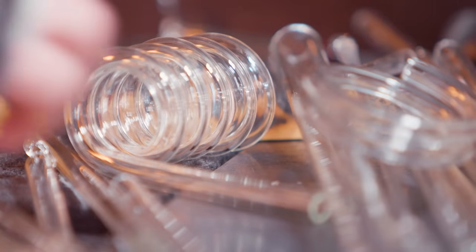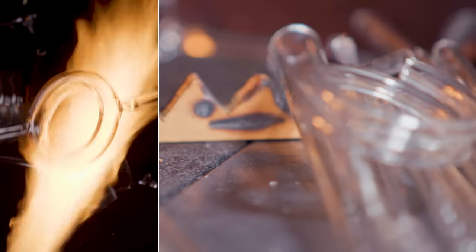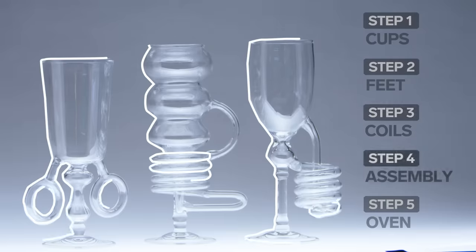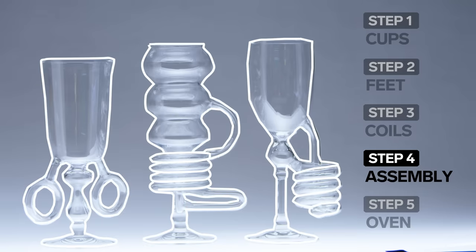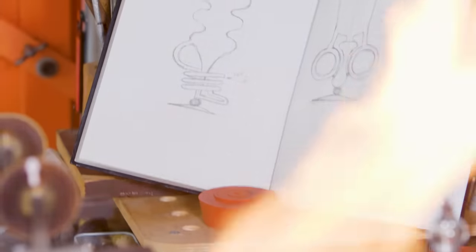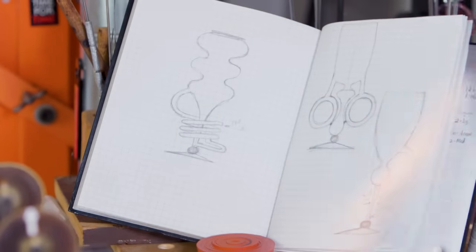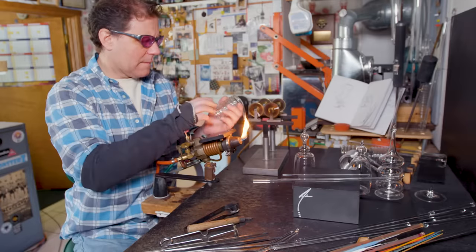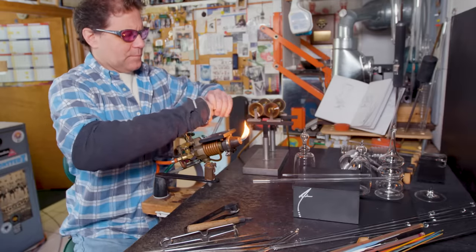And now for the fun part, we're going to assemble the coil, the foot and the cup all together. I've sketched out what I want the cups to look like, but this is where the tricky parts are.